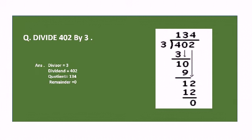Three 3s are 9, subtract to get 1. Bring down 2 to get 12. Three 4s are 12, so the remainder is 0 and our answer is complete. The quotient is 134 and the remainder is 0.